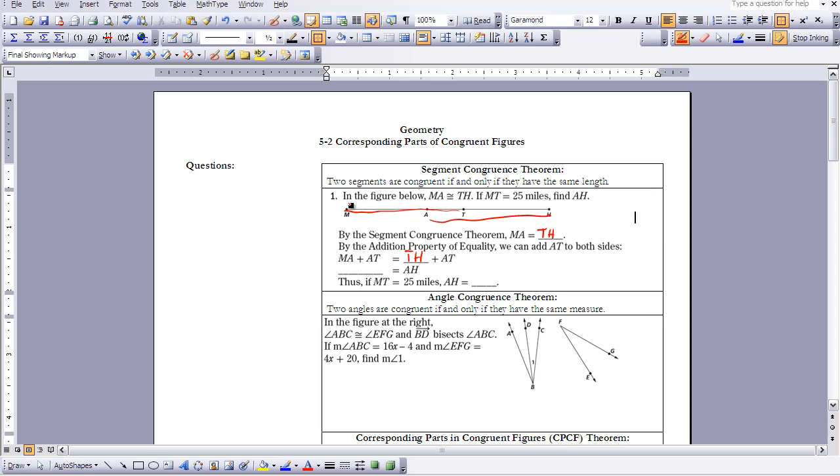We then can say MA is equal to AH. Thus, if MT equals 25, it would make sense that AH also equals 25.